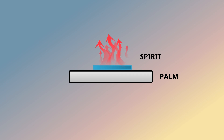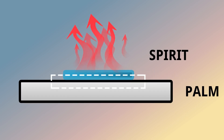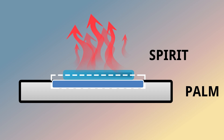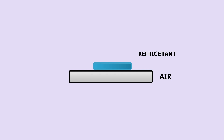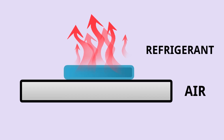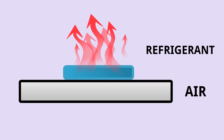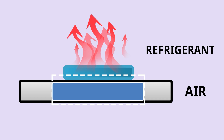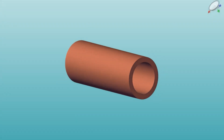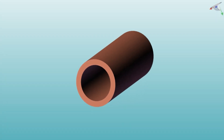Let's understand this with a simple diagram. This is the palm and this is the spirit; evaporation happens at the contact surface, from which the spirit takes the heat for evaporation. The palm loses heat and gets cold. Now, if we consider air instead of the palm, and refrigerant instead of spirit — refrigerant has properties like spirit. At normal pressure and temperature it starts to evaporate, and it takes the latent heat of vaporization from the air. So air loses heat and gets cold. The refrigerant passes through a copper pipe.